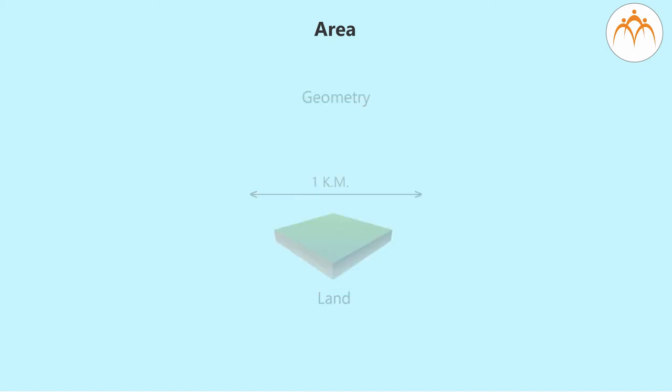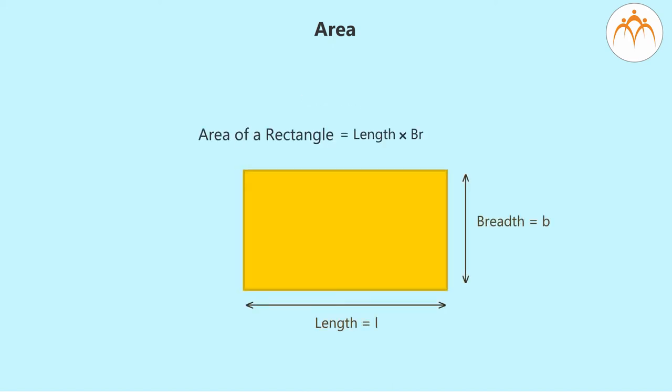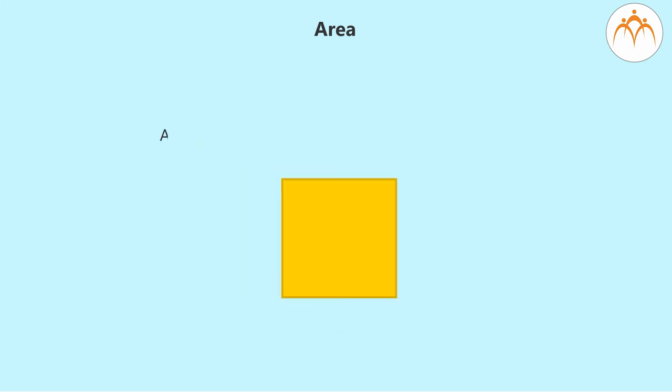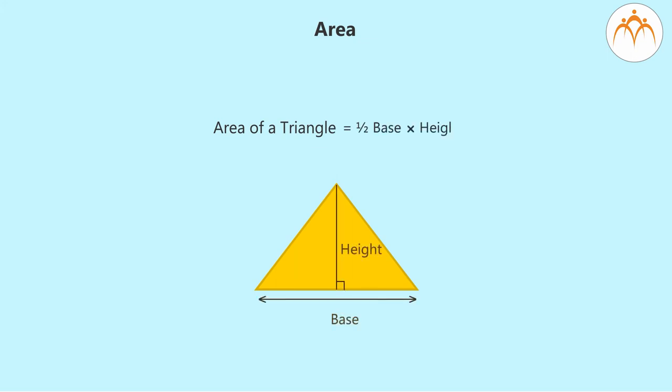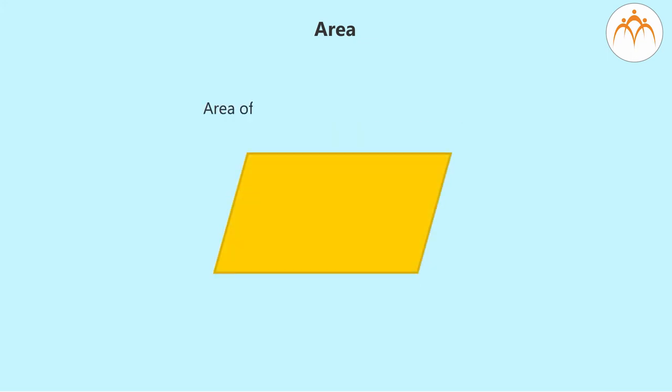We have learned that area of a rectangle is equal to length into breadth, that is L into B. Area of a square is equal to A squared, where A is the side of the square. Area of a triangle is equal to half into base into height. Area of a parallelogram is equal to base into height, where height is the distance between the base to the opposite parallel side.